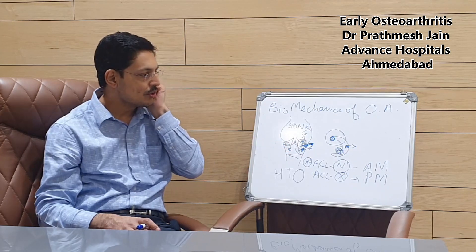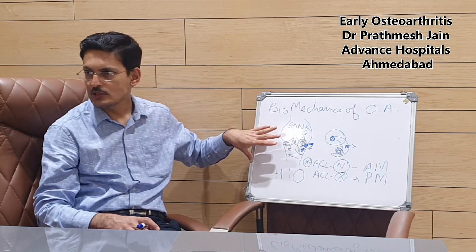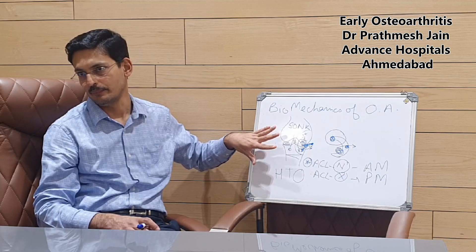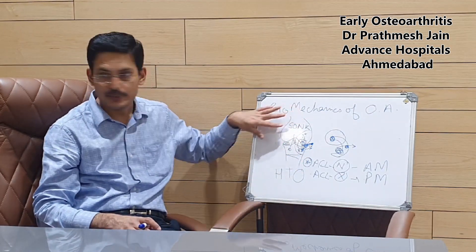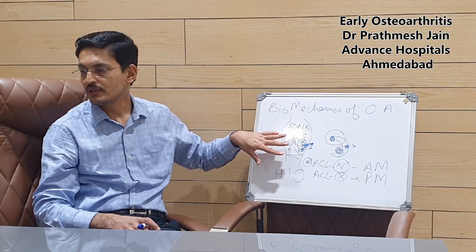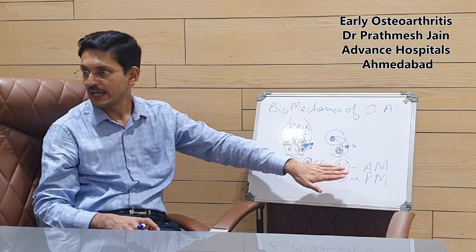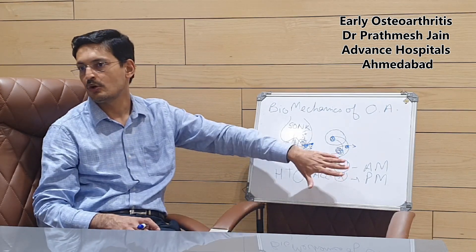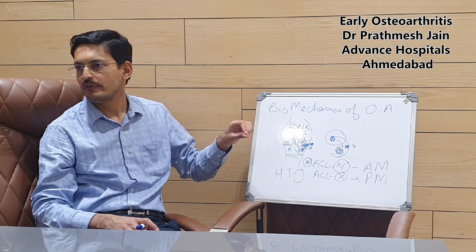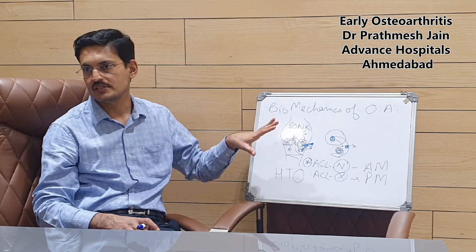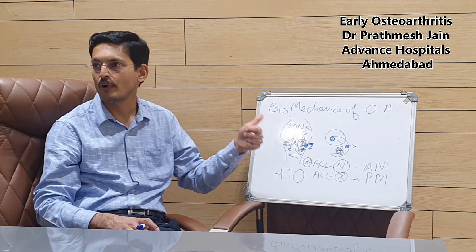The longevity of a mobile bearing unicondylar knee is almost the same as a total knee replacement — about 15 to 20 years of good results in the long term, if done with proper indications. Additionally, you preserve an intact ACL and intact PCL after this surgery.